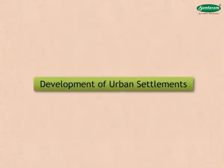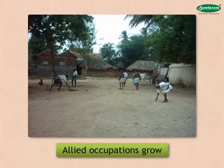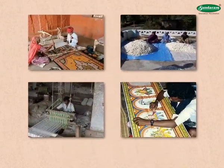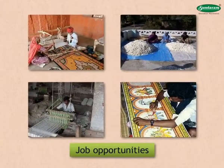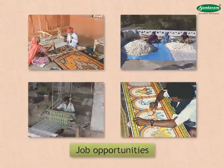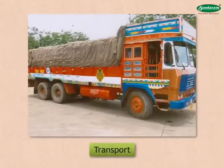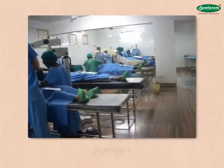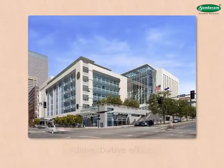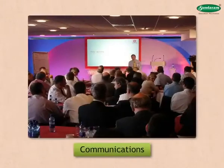In rural settlements, allied occupations grow along with the main occupations. This leads to the growth of job opportunities, and people migrate to such places for jobs, which leads to an increase in population. This further leads to the development of a number of services like transport, hospitals, administrative offices, banks, markets, hotels, shops, and communications.